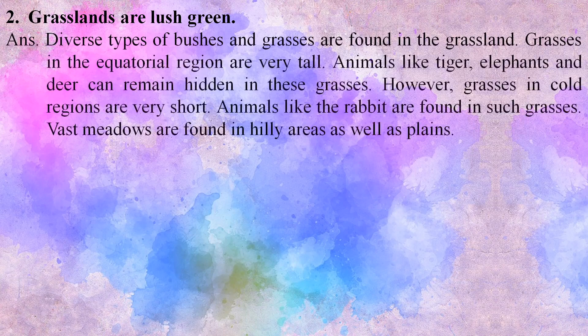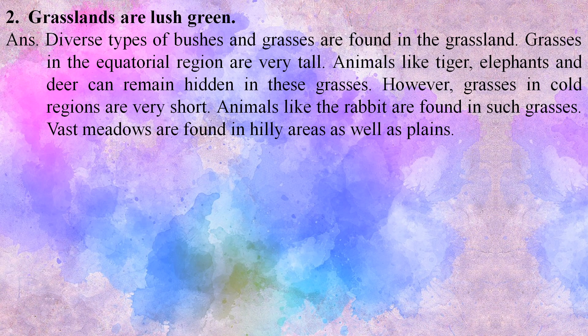Second, grasslands are lush green. Diverse types of bushes and grasses are found in grassland. Grasses in the equatorial region are very tall. Animals like tiger, elephants and deer can remain hidden in these grasses. However, grasses in cold regions are very short. Animals like rabbit are found in such grasses. Vast meadows are found in hilly areas as well as plains.